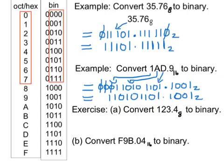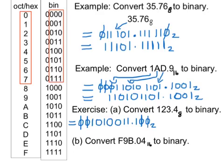For part A (octal), we replace each digit in the octal number by its three-digit binary equivalent. So one is 001, the three-digit binary equivalent of two is 010, and of three is 011. Put in our fractional point, and then the three-digit binary equivalent of four is 100. And we're in base 2.